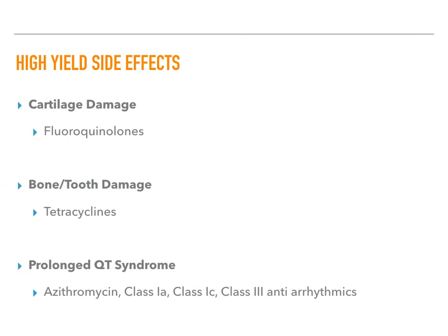Cartilage damage in children is associated with fluoroquinolones — this is why we don't give fluoroquinolones to children or young adolescents. Bone or tooth damage from chelation of the bone matrix is caused by tetracyclines, which we also avoid in pregnant patients and young children. Prolonged QT syndrome is associated with azithromycin and three antiarrhythmic classes: class 1A, class 1C, and class 3 — these affect the potassium current in the cardiac action potential.